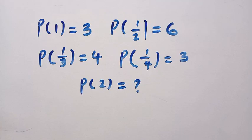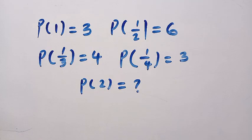Good day, viewers. You are welcome. Here we have an interesting functional equation. The question is: if P of x is a cubic polynomial, given that P of 1 equals 3, P of 1 over 2 equals 6, P of 1 over 3 equals 4, P of 1 over 4 equals 3, we are interested to find P of 2.